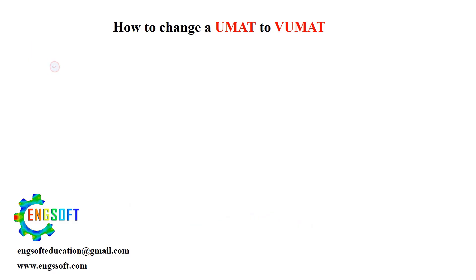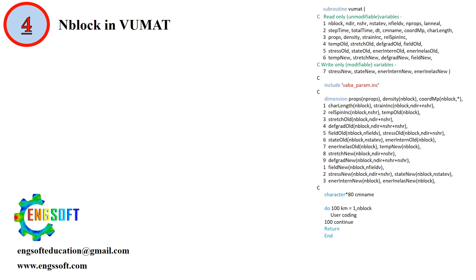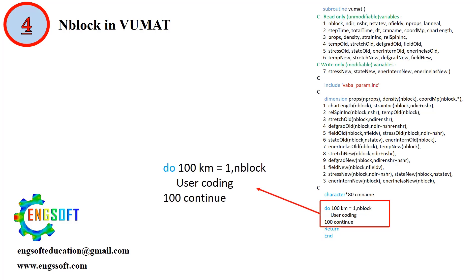4. Block in VU-MAT. In U-MAT, the subroutine is called once per material point, whereas in VU-MAT it processes a group of material points in one call. Therefore, you will often encounter arrays with a block dimension representing the number of material points being updated simultaneously.